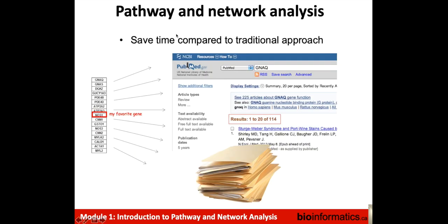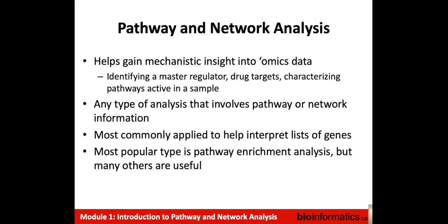Pathway network analysis saves time compared to the traditional approach. If you had hundreds or thousands of genes and you wanted to interpret them manually, you'd have to look each one up, understand its function, and understand the relationship of the functions of all the genes on your list. This approach is very time consuming. Pathway network analysis helps gain mechanistic insight into omics data in a more automated way — for instance, we could identify a master regulator, drug targets, or characterize pathways that are active in a sample.